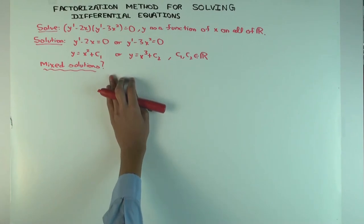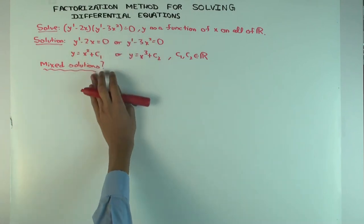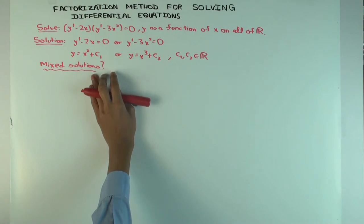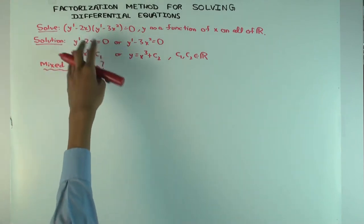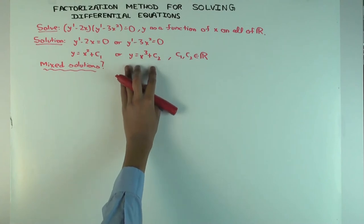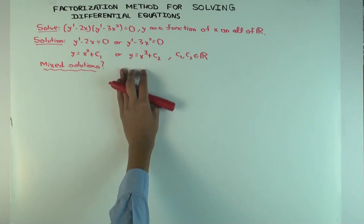Now I want to figure out whether there are mixed solutions. A mixed solution is one that follows one form for part of the domain and the other form for the rest of the domain. Since y is assumed to be differentiable, the function is continuous and the derivative is also continuous. So any solution is going to be a differentiable function by definition.